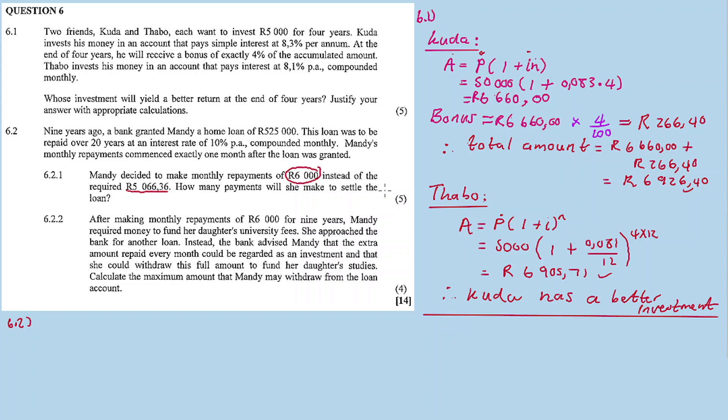We use the present value formula. P equals x times [1 - (1 + i)^(-n)] / i. The repayment is 6000, the loan (present value) is 525,000, interest rate is 10% divided by 12 for monthly, and we want to calculate the number of payments, which is the value for n.